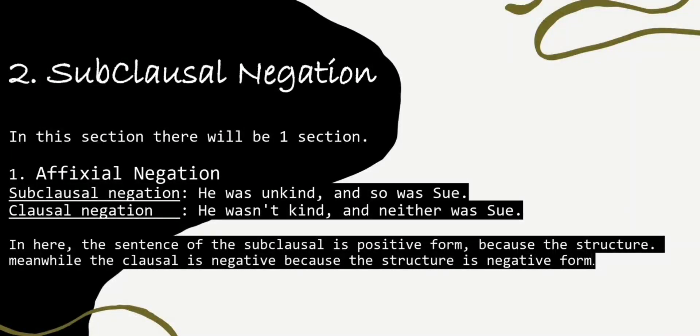The second subchapter is about subclausal negation. As mentioned in the first subchapter, negation can be added with affixal words such as 'un-'. Subclausal negation also uses affixal negation, such as prefixes 'non-' or 'un-', or suffixes like '-less'. The example of subclausal negation would be: 'He was unkind, and so was Sue.'